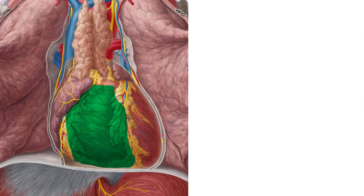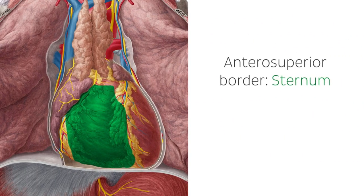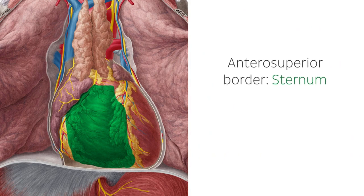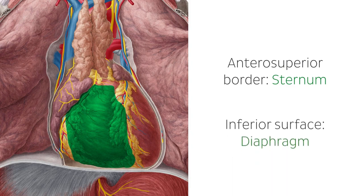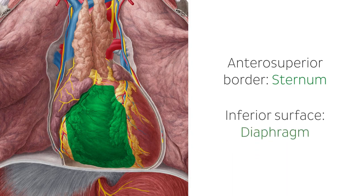It is bordered anterosuperiorly by the sternum, and this circular convex area majorly contributes to the sternocostal surface of the heart. The inferior surface is situated upon the diaphragm, and this small flat area makes up part of the diaphragmatic portion of the heart.